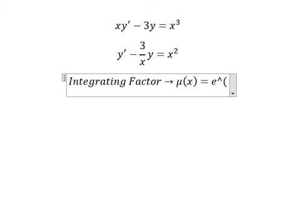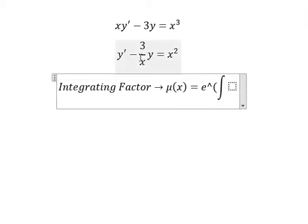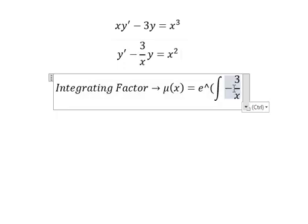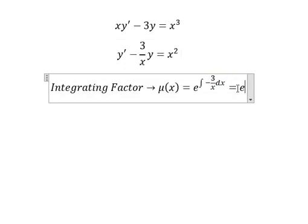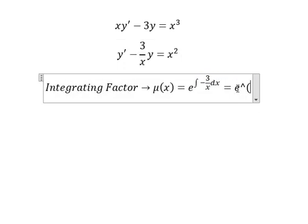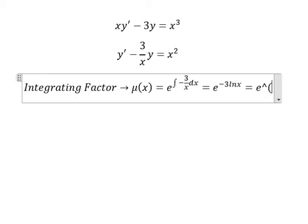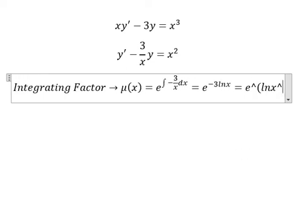e to the power of the integral. We see that negative 3 over x next to y, that is for integrating factor. So this one we have negative 3 ln(x). Let that negative 3 go inside the natural logarithm here, so we have e to the power of ln(x) to the power of negative 3.